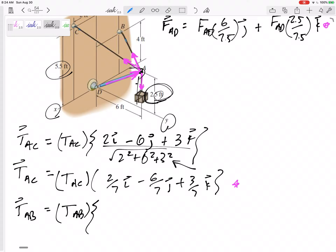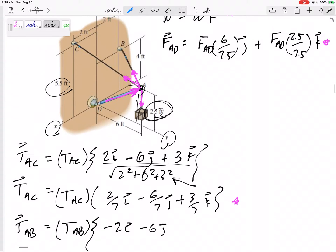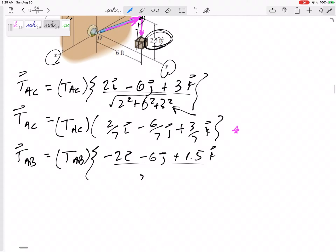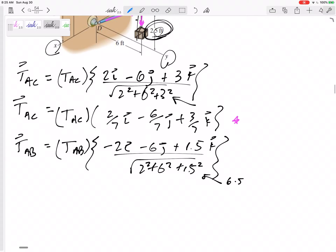how far does it go in the X? It goes backwards 2 in the X. How far does it go in the J? It goes back 6 in the J. How far does it go in the K? It only goes from 2.5 to 4. So, it still does go up 1.5 in the K. Square root 2 squared, 6 squared, 1.5 squared. Take the square root. This is 6.5 on the bottom here.